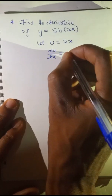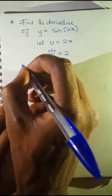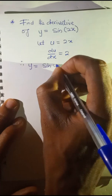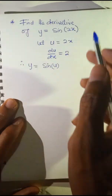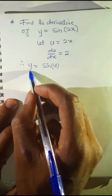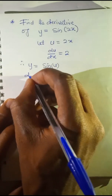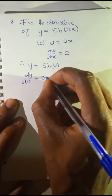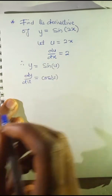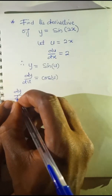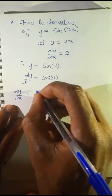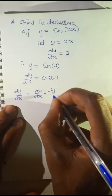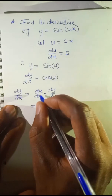Differentiating u with respect to x gives du/dx equal to 2. Therefore y is equal to sine u, since we let 2x be u. Then differentiate y with respect to u: dy/du is equal to cos u. To obtain dy/dx, you multiply du/dx by dy/du.